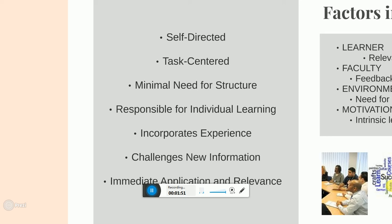Educators must understand that younger students tend to depend on the teacher for instruction and direction, whereas an adult learner tends to be self-motivated. An adult learner usually reads chapters, completes assignments, and prepares for exams at a time that is convenient for them instead of following a given schedule provided by the instructor. This makes the adult learner very task-oriented and needing minimal structure.